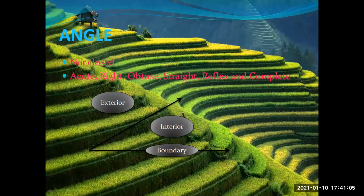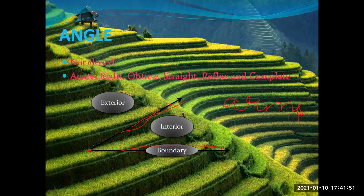Next we are going to see what an angle is. An angle is formed when two rays come together at a single point. As you can see in this picture, there are two rays. These two rays are called the arms, and the point where these two rays are joined is called the vertex.